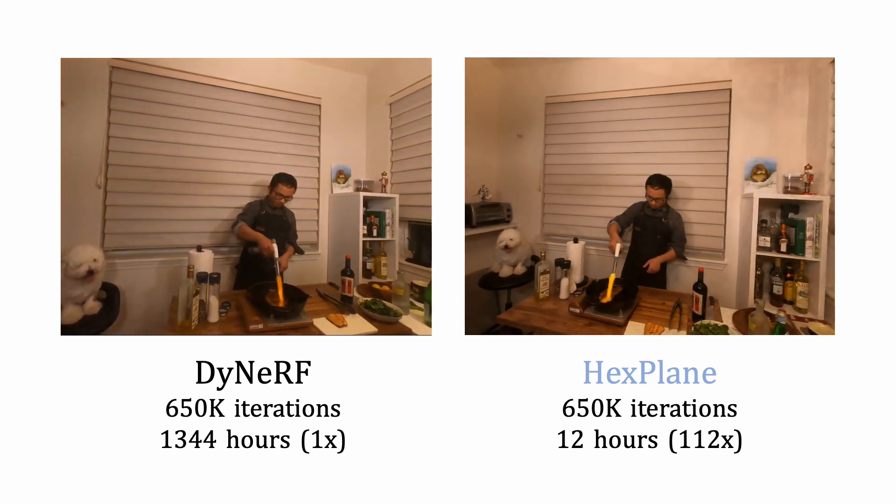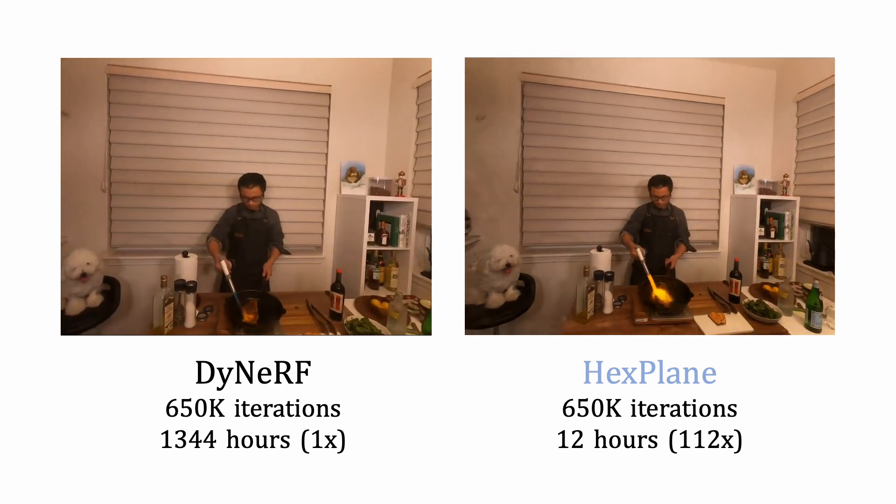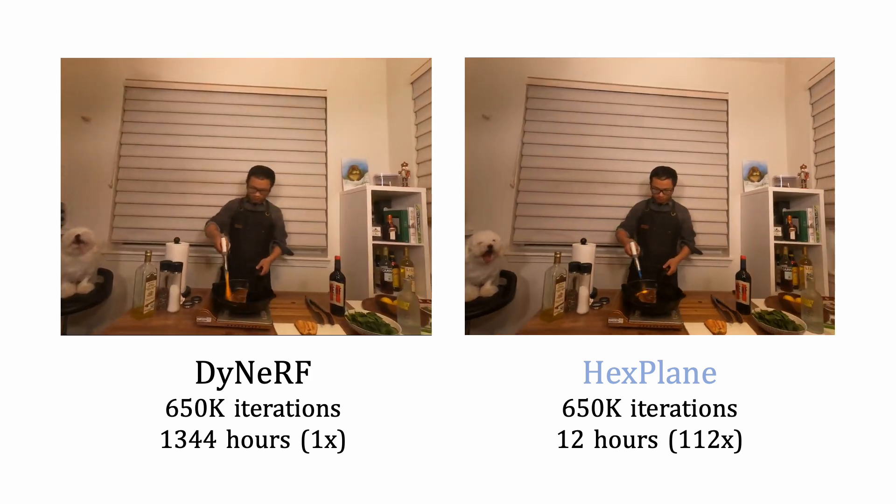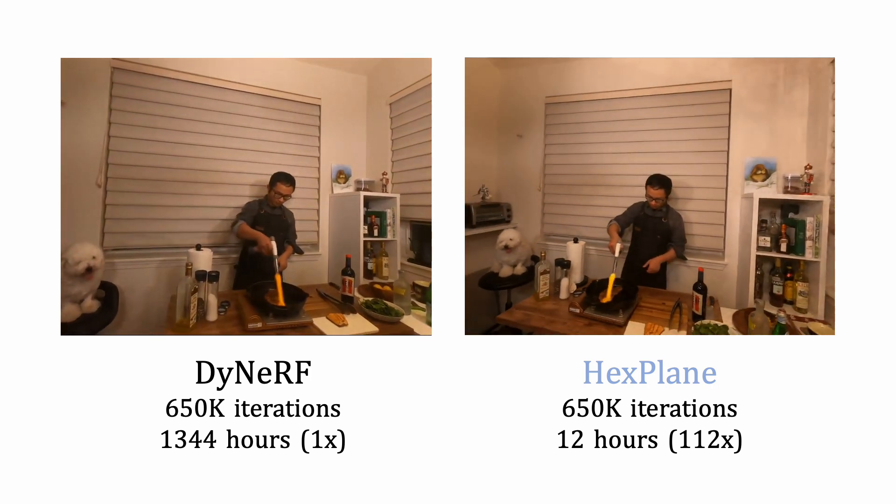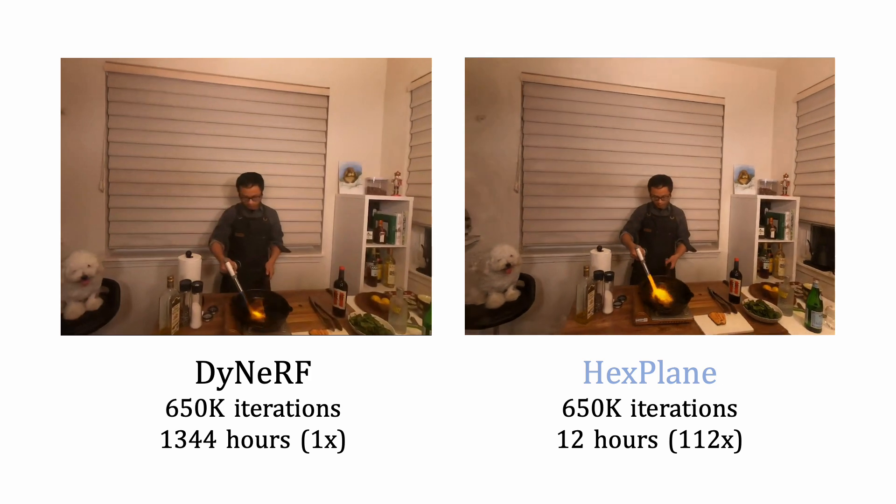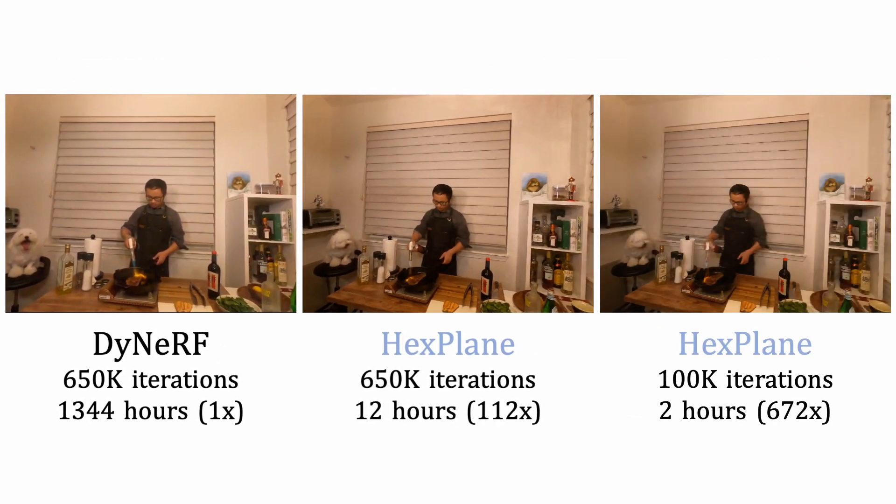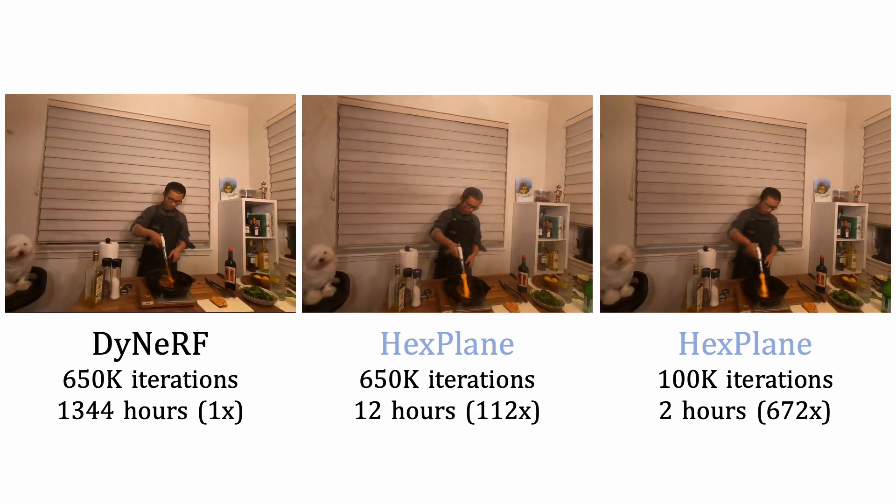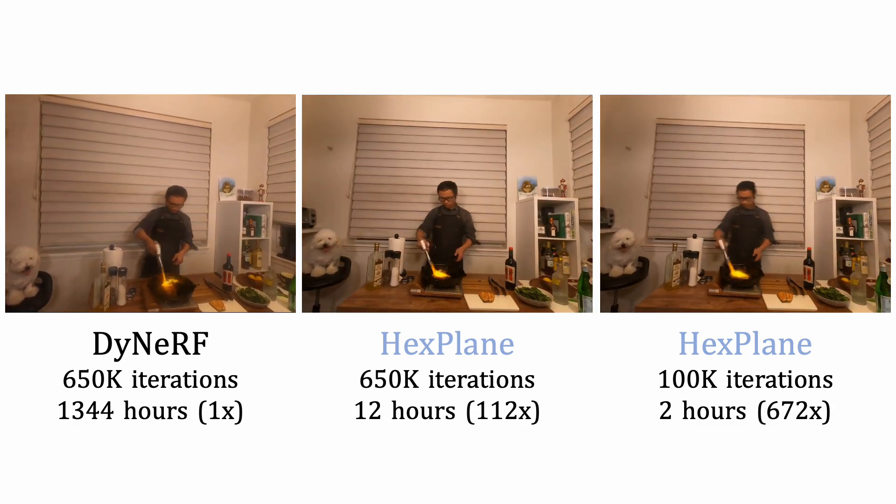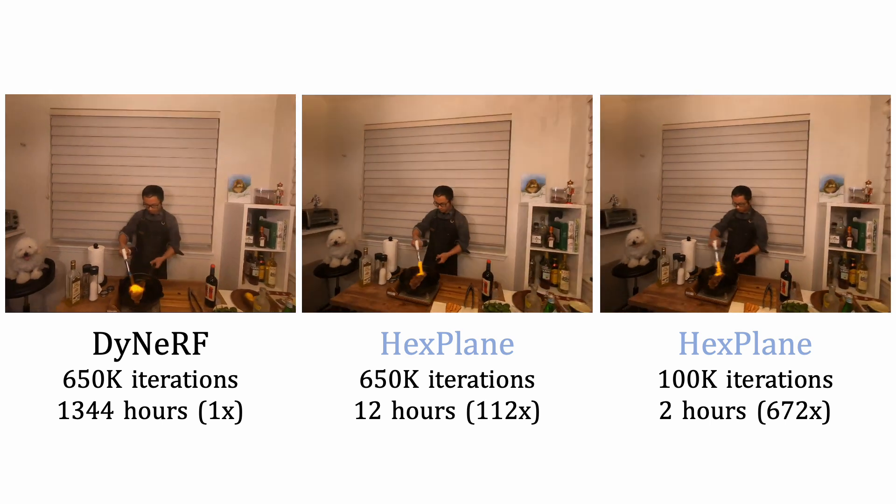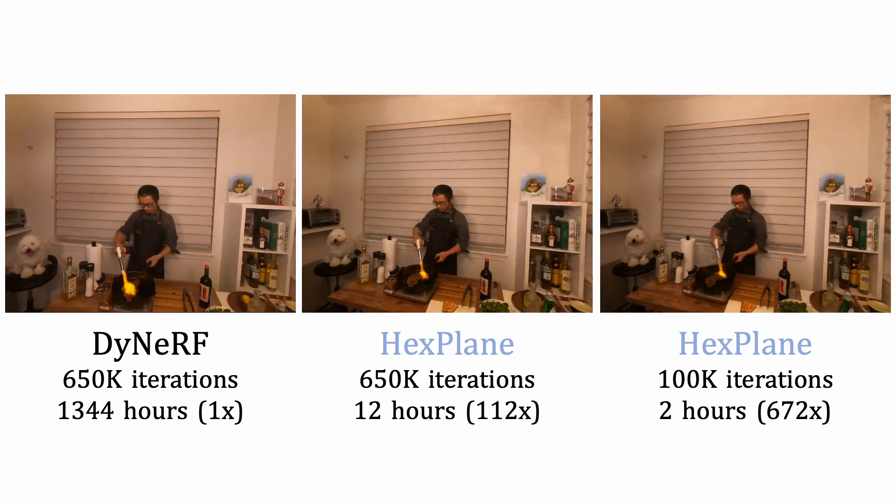With exactly the same training iteration numbers, HexPlane is about 100 times faster than DyNeRF with competing performance. Trained with few iterations, HexPlane could still give promising results with significant speed-up.